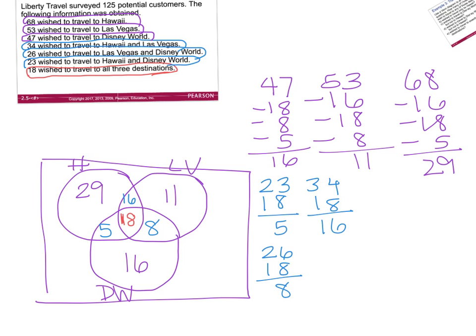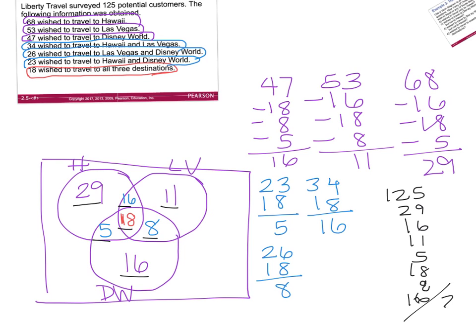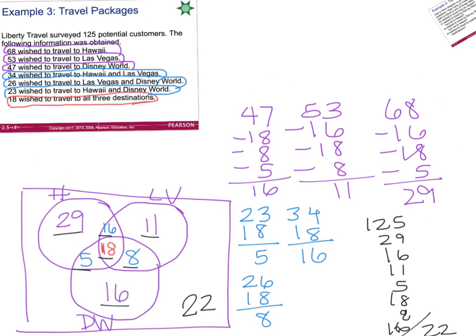Finally, figure out how many people go on the outside. We surveyed 125 customers. Subtract 29, 16, 11, 5, 18, 8, and 16 from 125. That leaves 22 people who want to go somewhere besides Hawaii, Las Vegas, and Disney World. Once the Venn diagram is set up, you can go through and start answering questions.